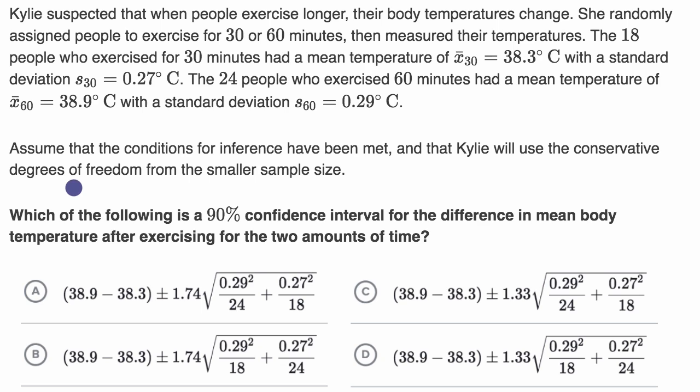In previous videos, we talked about the general form of our confidence interval, our T interval, which we're going to use because we're dealing with means and we're dealing with the differences in means. And so our T interval is going to have the form,